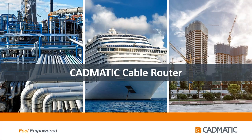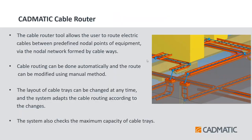Now we will start with our session on Cadmetic Cable Router. The cable router tool allows users to route electric cables between predefined nodal points of equipment via the nodal network formed by the cableways. Cable routing can be done automatically and the route can be modified using the manual method. The layout of the cable trace can be changed at any time, and the system adapts to those changes and checks the maximum capacity of the cable tray.